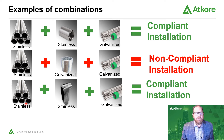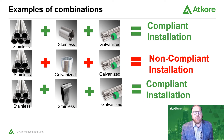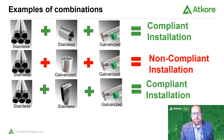Looking at a third example: stainless steel conduit, a stainless steel conduit body, and then galvanized rigid conduit — this is a compliant installation. You could use a stainless steel conduit body, or swap it out for a compression fitting, set screw fitting, or any stainless steel fitting. Any of those installations will be compliant.